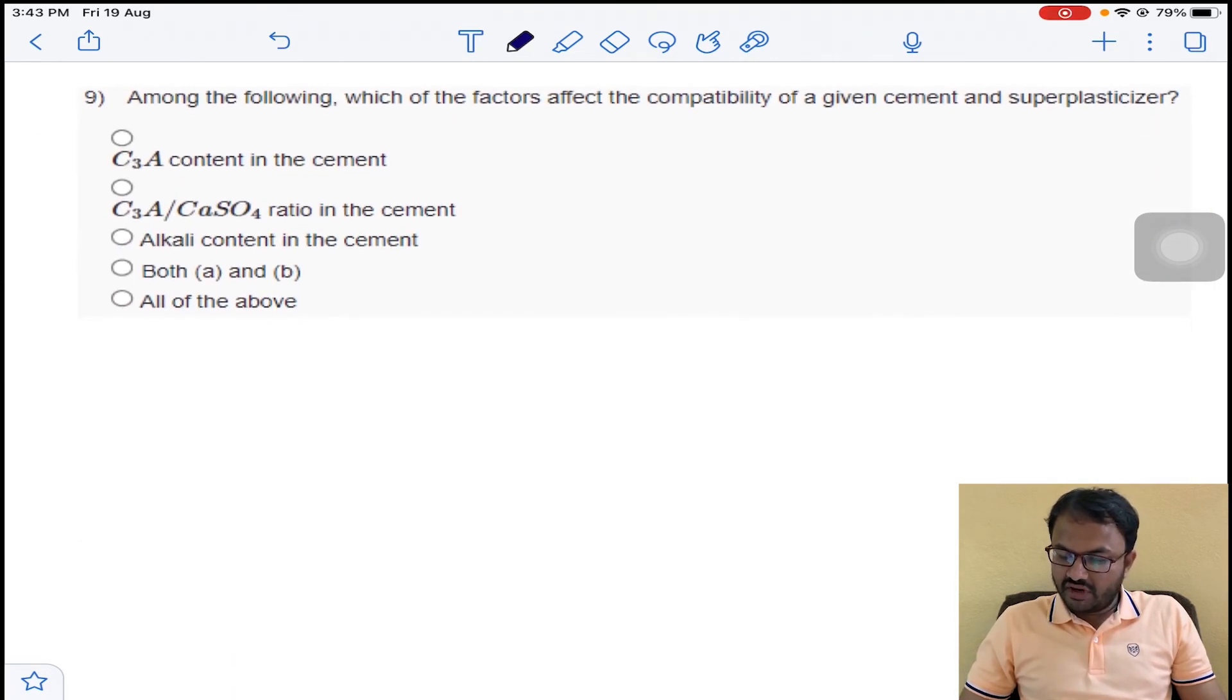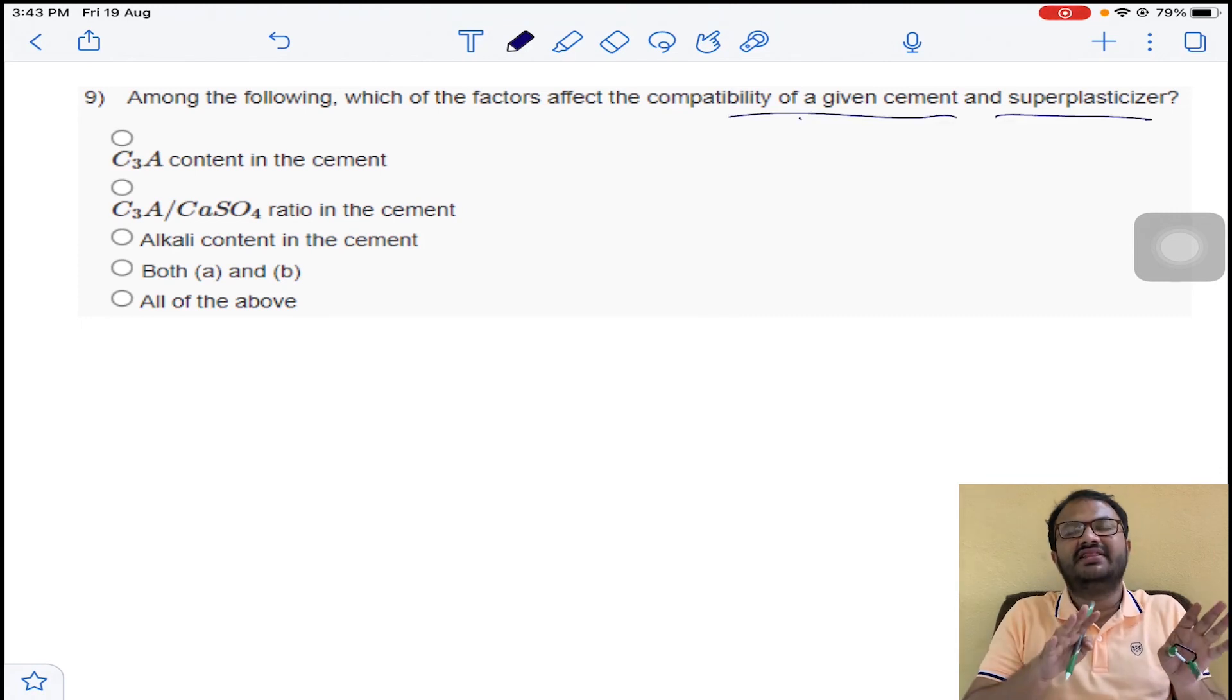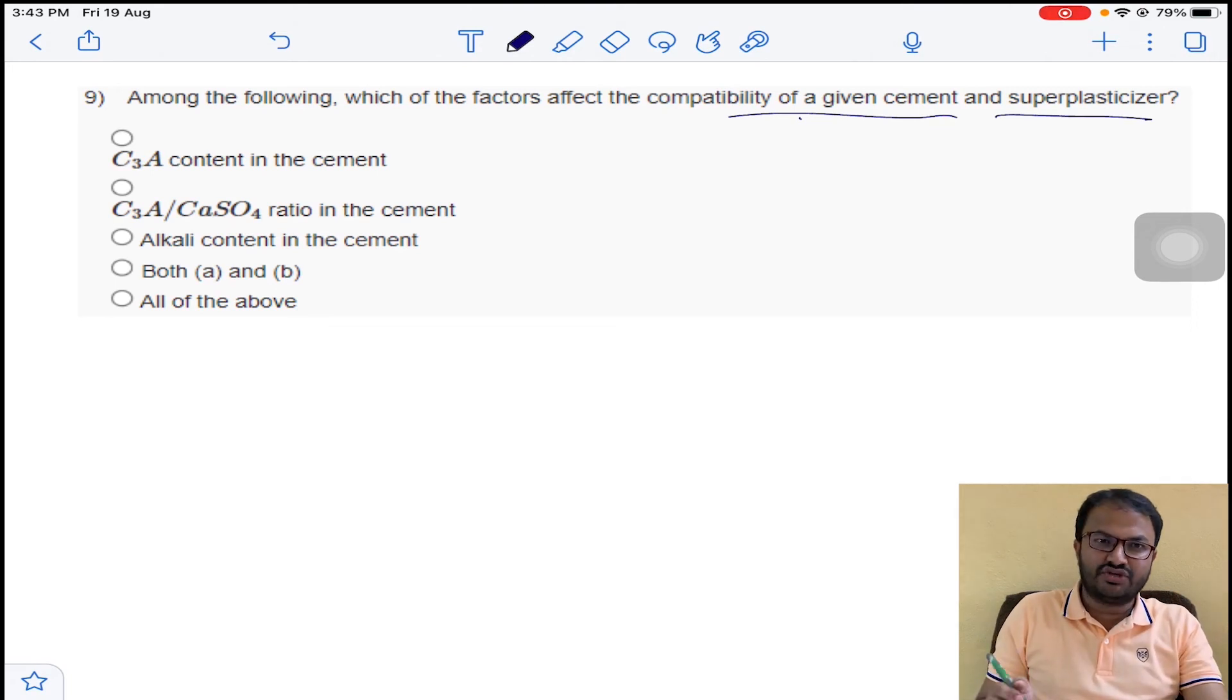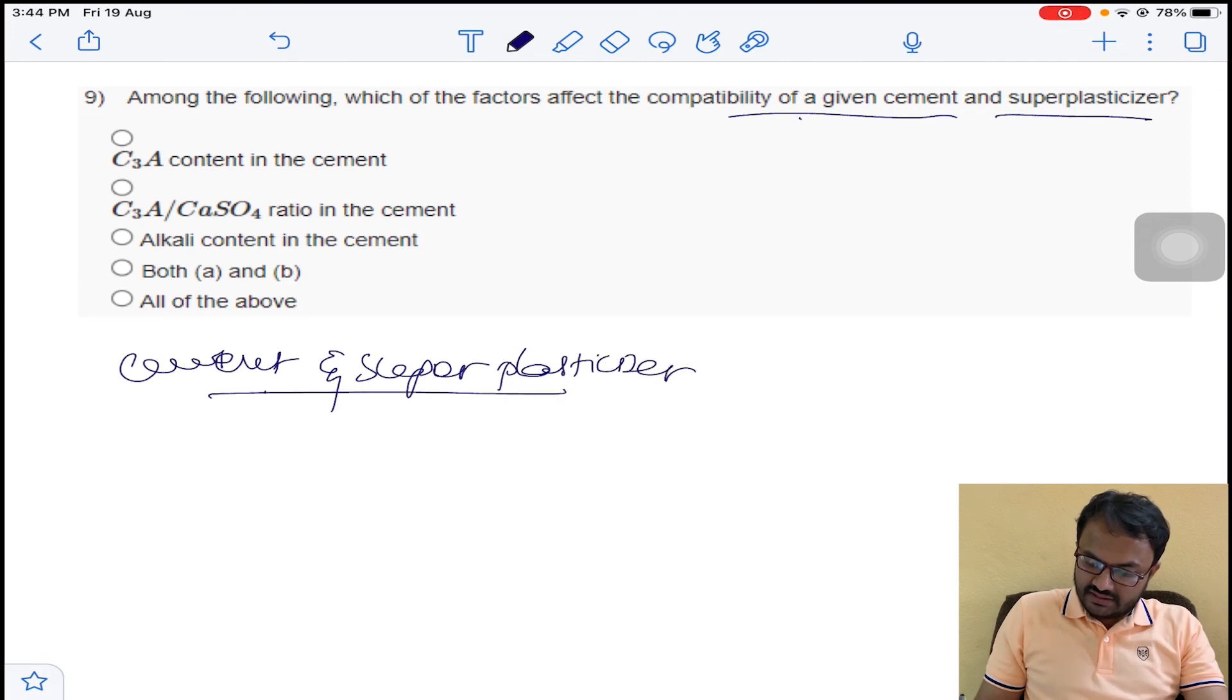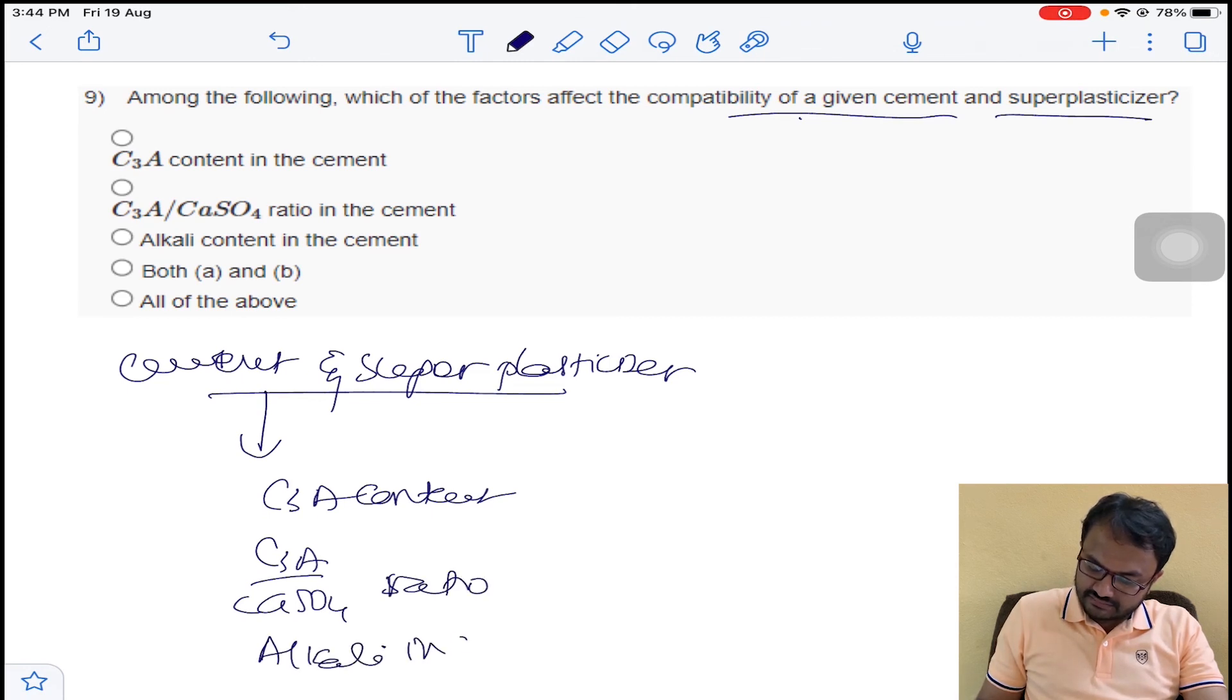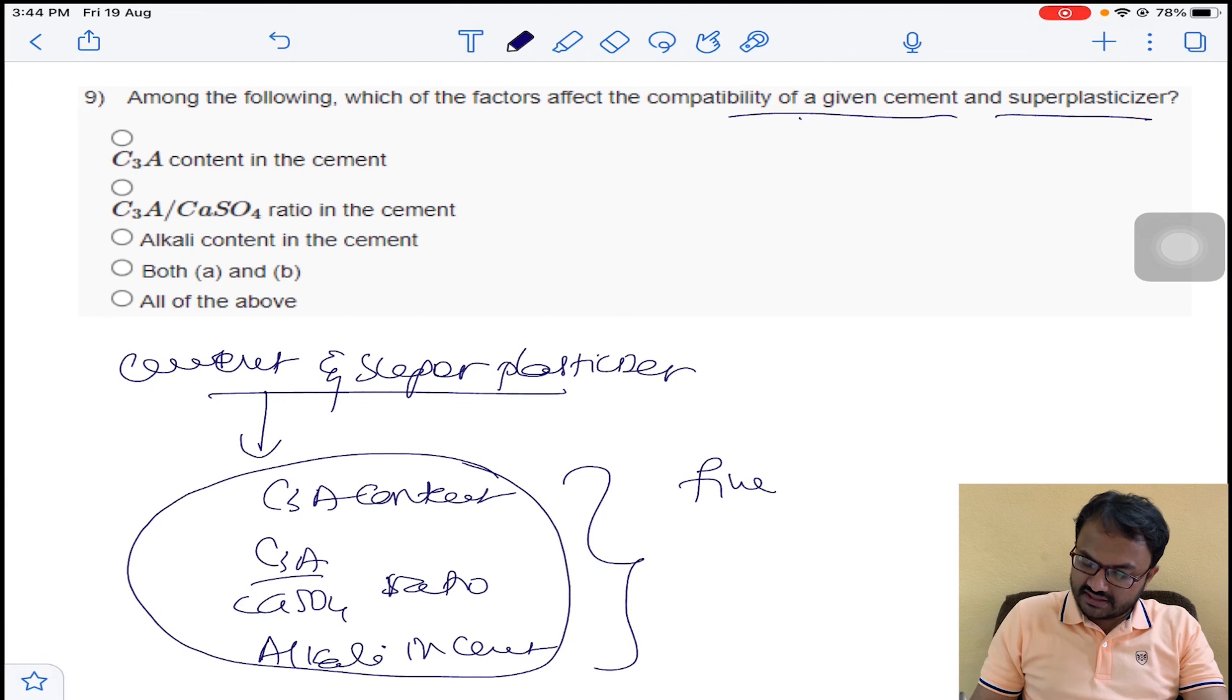The next question is: among the following, which of the factors affect the compatibility of a given cement and superplasticizers? When there should be a proper compatibility between cement and superplasticizers, it will depend on C3A content, C3A by calcium sulfate ratio, alkalis in cement, and the fineness of cement. All these are correct, so the last option for question number 9.